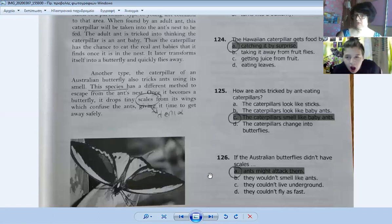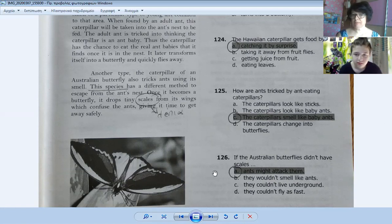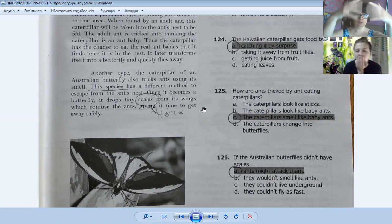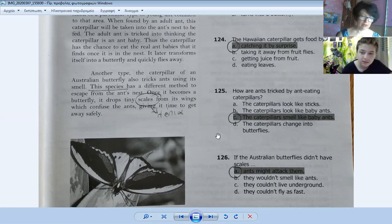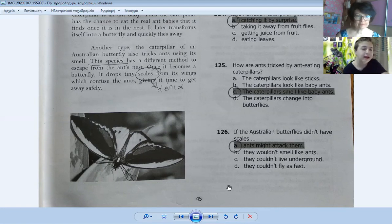Question 125: how are ants tricked by ant-eating caterpillars? The caterpillars smell like baby ants. It's in the third paragraph: the adult ant is tricked into thinking the caterpillar is an ant baby. Question 126: if the Australian butterflies did not have scales, ants might attack them. It drops tiny scales from its wings which confuse the ants, giving it time to get away safely.